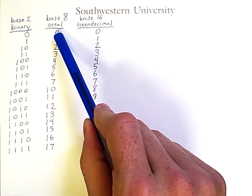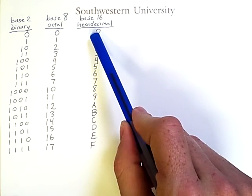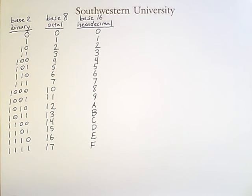Octal, which is base 8, and hexadecimal, which is base 16. These are important because 8 and 16 are also powers of 2, which makes these number systems ideal for representing binary numbers in compact form, as we shall soon see.